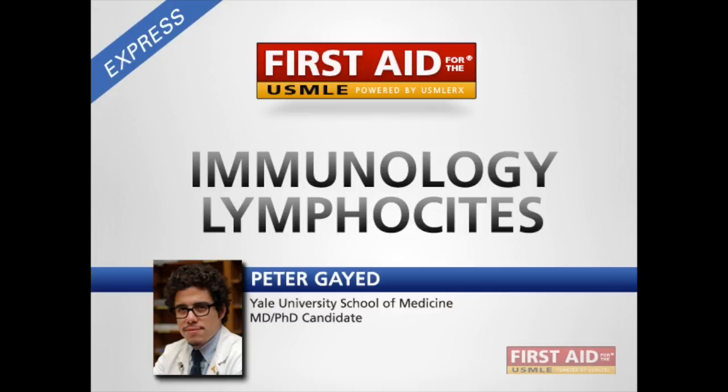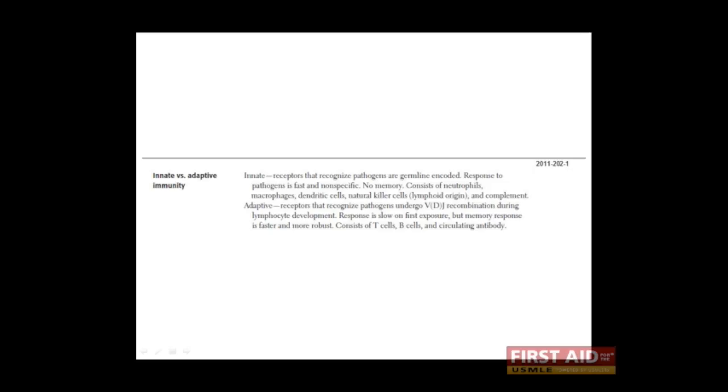The adaptive system is what makes vertebrate species, humans included, unique from invertebrate species. While vertebrate and invertebrate species both have an innate system, only the jawed vertebrates have an adaptive system. And most of what we'll be talking about will be the adaptive system.